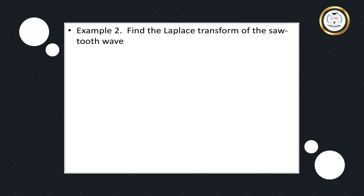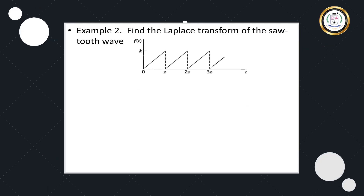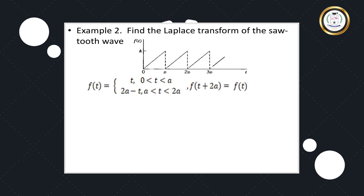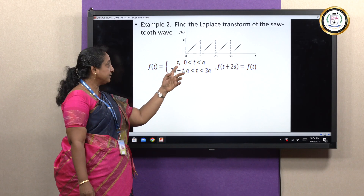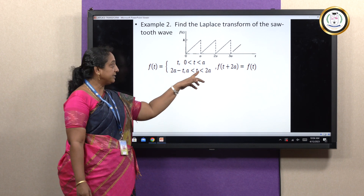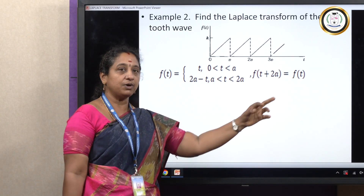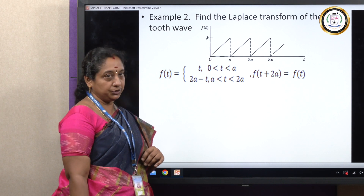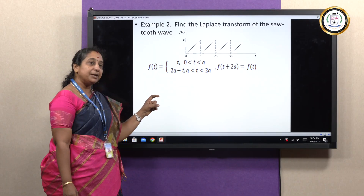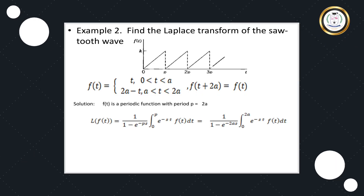Next, we consider the sawtooth wave: f(t) = t for 0 ≤ t ≤ a, and f(t) = 2a − t for a ≤ t ≤ 2a. Since f(t + 2a) = f(t), the period is p = 2a. In the Laplace Transform formula, we replace p with 2a, splitting the integral into 0 to a and a to 2a, substituting the respective functions.